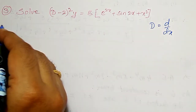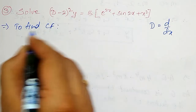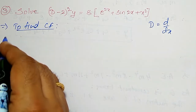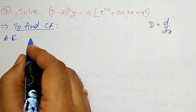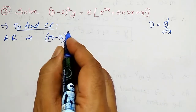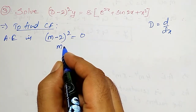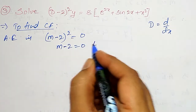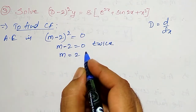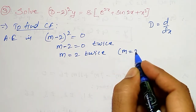First, to find CF, D is replaced by m to find out the auxiliary equation. The auxiliary equation is given by: (m minus 2) the whole square must be equal to 0. Or, (m minus 2) equal to 0 twice. Therefore, m equal to 2, twice — a repeated root.